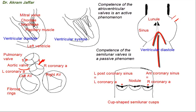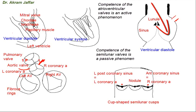During ventricular diastole, because of the elastic recoil of the walls of the great vessels — the pulmonary artery and the aorta — some blood occupies the sinuses, and the column of blood exerts pressure on the cusps and pushes them closed. It is at this time, during ventricular diastole when the aortic cusps are closed, that blood has a chance to pass through the openings of the coronary arteries. This is the perfect time for perfusion of the ventricles — when the ventricles are relaxed, blood flushes the coronary circulation.